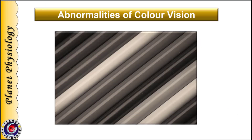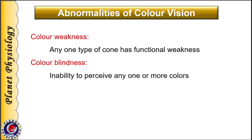Now let us study abnormalities of color vision. Based on the type of defect, color vision abnormalities can be of two types: color weakness and color blindness. In case of color weakness, any type of cone is functionally weak and hence cannot transmit signals properly. In case of color blindness, there is absence of a particular type of cone and hence the person cannot perceive that particular color.